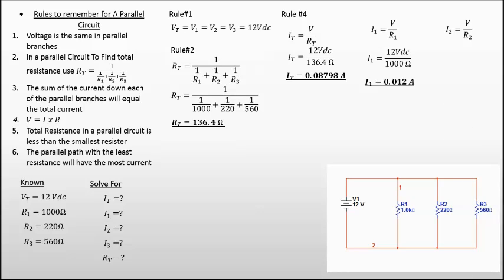Now let's solve for I2. I2 is going to be your voltage over your resistor two. So it's your 12 volts divided by your 220 ohms, which gives us a current down I2 of 0.0546 amps.